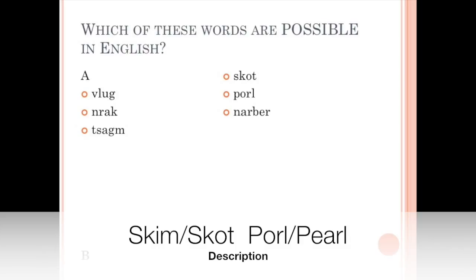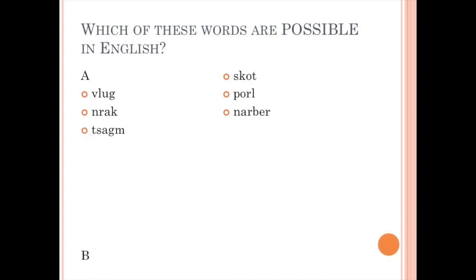The English language allows the consonant cluster sk, as in the word skim, and it allows the cluster earl, as in the word pearl. So it definitely would allow a word like scot, or porl, or narber. English doesn't allow the consonant cluster vl, as in vlug. The name Vladimir, which has such a cluster, is a borrowing. Likewise, nyak and stam have consonant clusters which English simply does not.